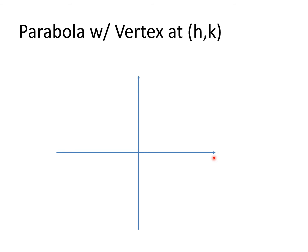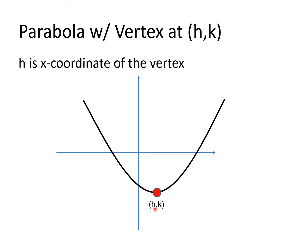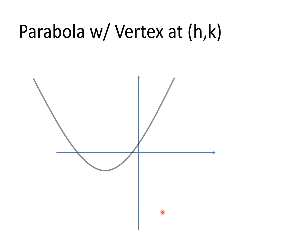Let's say we have the x-axis and the y-axis, and this is the curve of our parabola that opens upward, with its vertex on the fourth quadrant. The vertex will have the coordinates (h,k). When we say h, that is the x-coordinate of our vertex — the first element of its coordinate. And k is the y-coordinate of our vertex, the second element of the ordered pair. So h is the x-coordinate and k is the y-coordinate of our vertex.